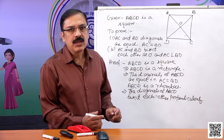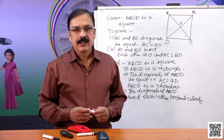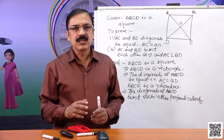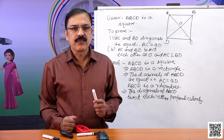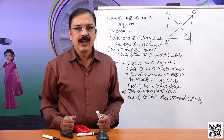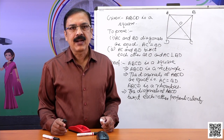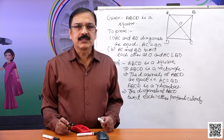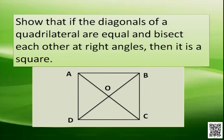By using the properties of a square — that it is both a rectangle and a rhombus — and by using the properties of rectangle and rhombus, we can prove that the diagonals of a square are equal and bisect each other at right angles.